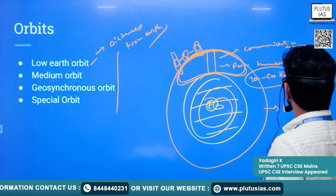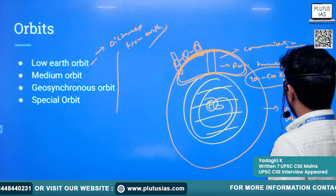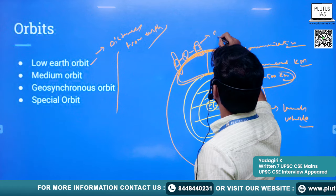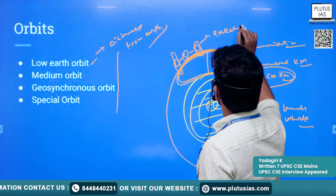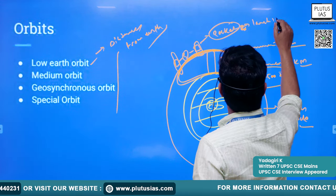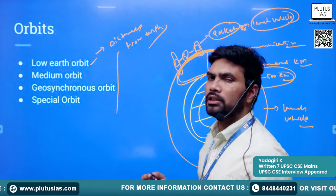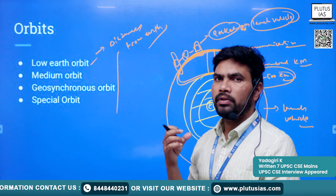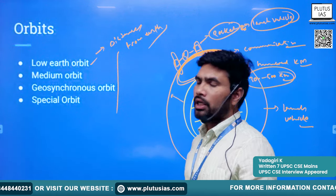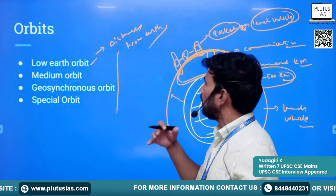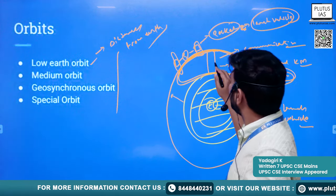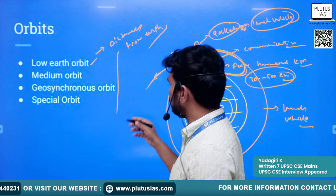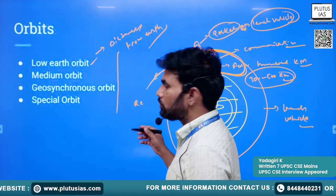One reason for the limited reach of early LEO satellites was that launch vehicles were not powerful enough. In general language, a launch vehicle is called a rocket. The launch vehicles could lift the satellite only to a limited height. Because of this limitation, communication from these satellites was confined to a limited area. However, low earth orbit is very useful for remote sensing.